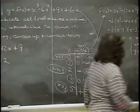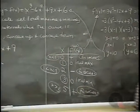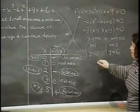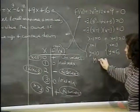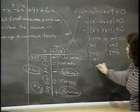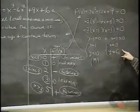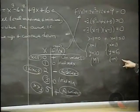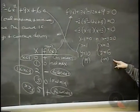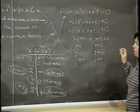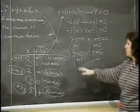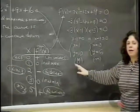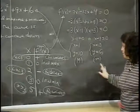At x equals 1, f prime changes sign from positive to minus, meaning the function goes from increasing to decreasing — so we have a local maximum at (1, 10). At x equals 3, f prime changes from negative to positive — decreasing to increasing — giving a local minimum at (3, 6).